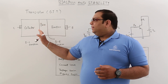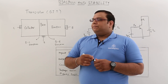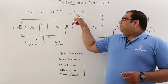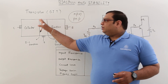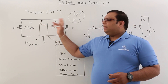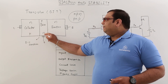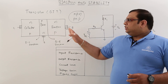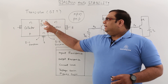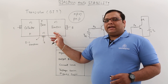The transistor is a three-terminal device consisting of emitter, collector, and base. There are two types of transistors: NPN and PNP. In an NPN transistor, the collector is N-type, base is P-type, and emitter is N-type — so P-type material is sandwiched between two N-type materials. In a PNP transistor, the emitter and collector are P-type and the base is N-type — so N-type material is sandwiched between two P-type materials.